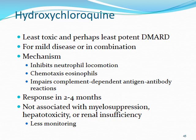Hydroxychloroquine is another traditional DMARD, considered probably the least toxic but also the least potent for slowing RA progression. It is really only for mild disease or in combination with other DMARDs. Its mechanism includes inhibiting neutrophil locomotion, decreasing chemotaxis of eosinophils, and impairing complement-dependent antigen-antibody reactions — producing a general decrease in inflammation.